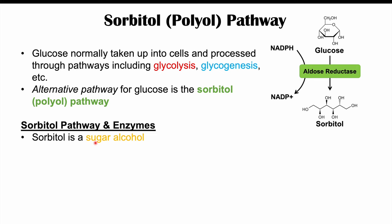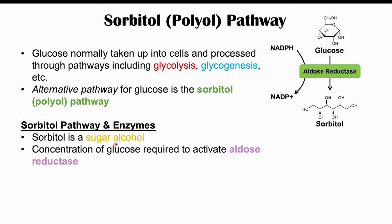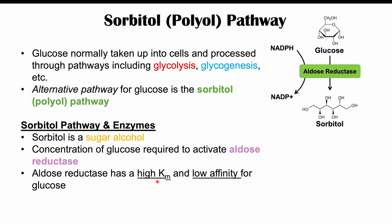This pathway is activated in particular states. Aldose reductase has a high Michaelis-Menten constant (KM), meaning it has a low affinity for glucose and requires a high glucose concentration to become activated. Most of the time, glucose is routed into glycolysis, glycogenesis, or the pentose phosphate pathway, but high glucose levels activate aldose reductase and drive sorbitol formation.